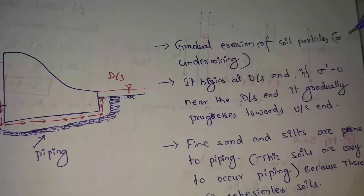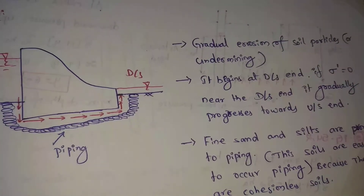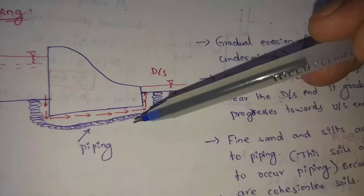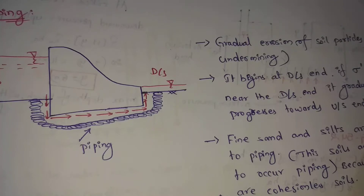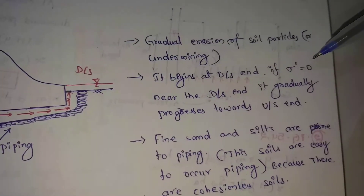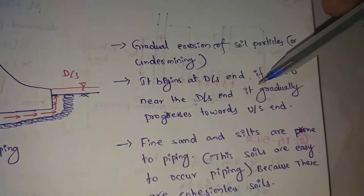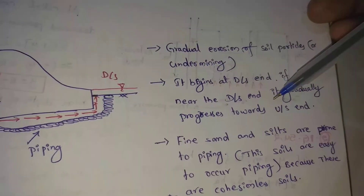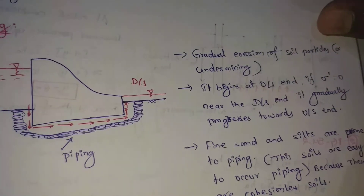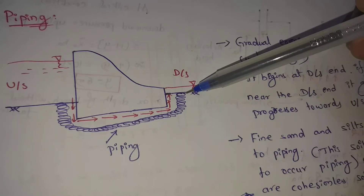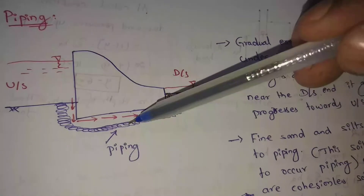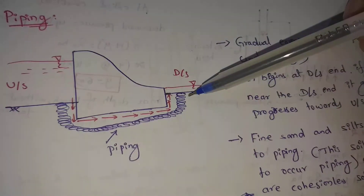Gradual erosion of soil particles — undermining — occurs. It begins at the downstream end when effective stress is equal to zero. Near that downstream end, it gradually progresses towards the upstream end. So this piping first acts on the downstream side, then gradually works towards the upstream side, and this empty space is created.